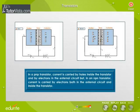In a PNP transistor, current is carried by holes inside the transistor and by electrons in the external circuit. But in an NPN transistor, current is carried by electrons both in the external circuit and inside the transistor.